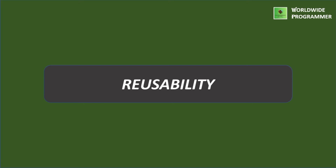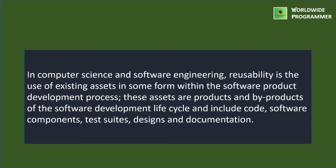Next one is reusability. Object-oriented technology allows reusability of classes by extending them to other classes using inheritance. Once a class is defined, other programmers can also use it in their programs and add new features to the derived classes. In computer science and software engineering, reusability is the use of existing assets within the software product development process. These assets include code, software components, test suites, design, and documentation.